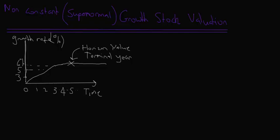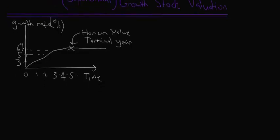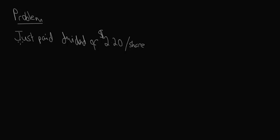So let's begin by doing a problem. For example, let's say that a company has just paid a dividend of $2.20 a share, $2.20 per share. So that's our first tidbit of information.